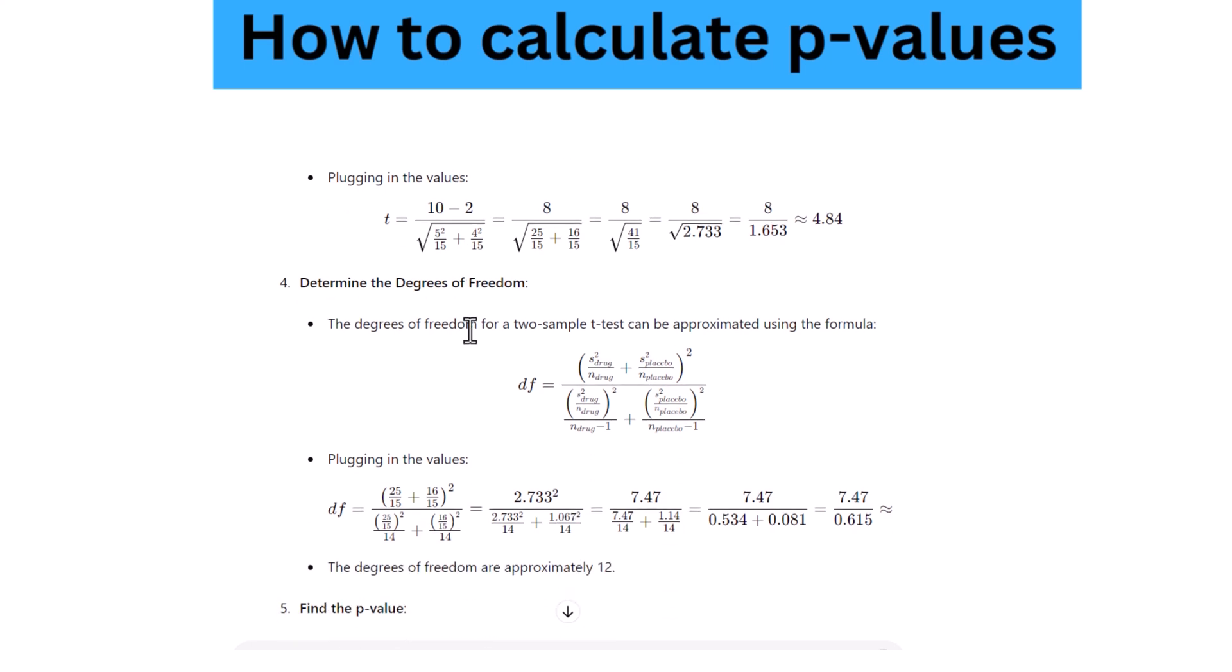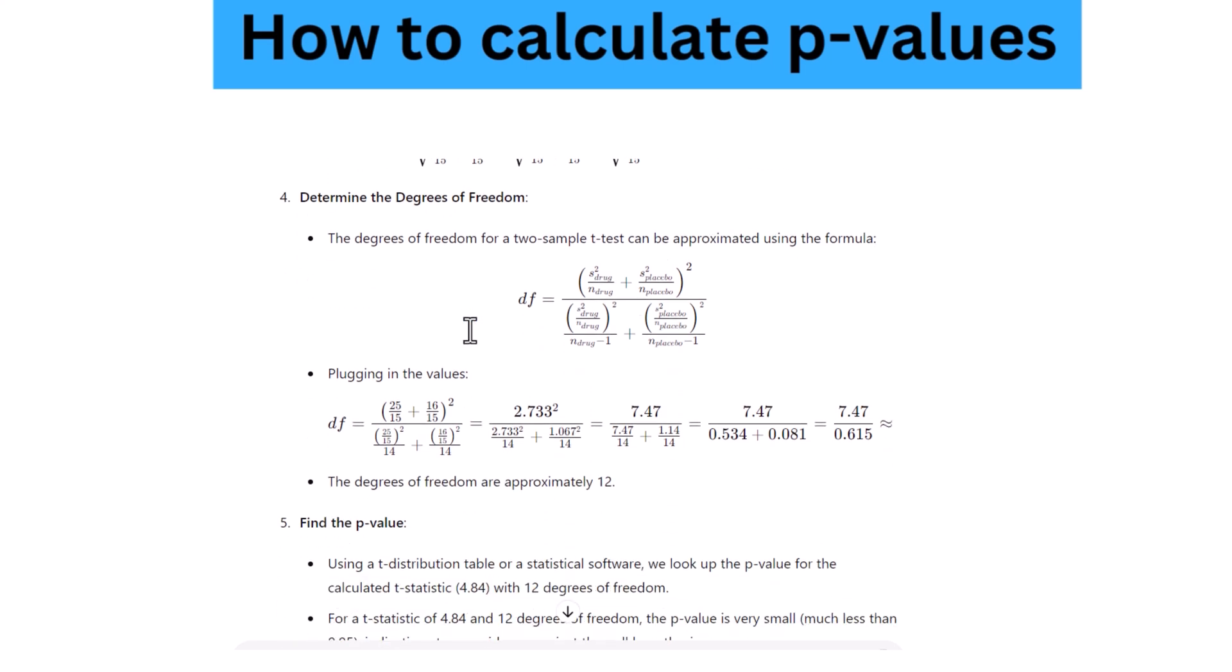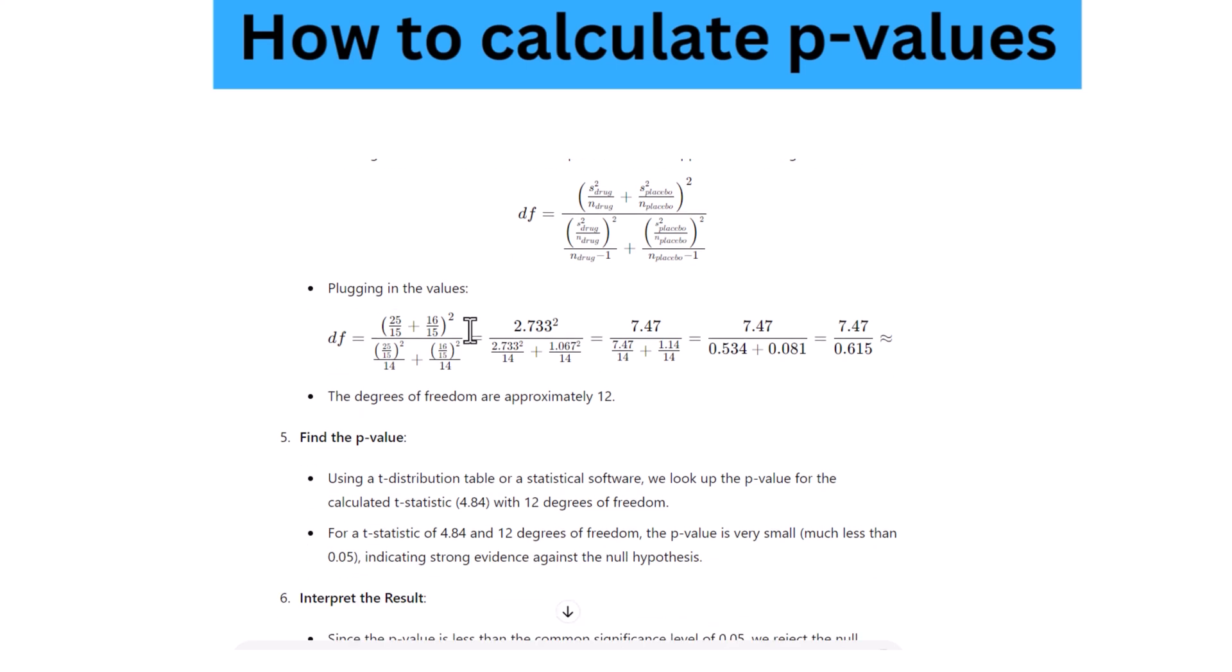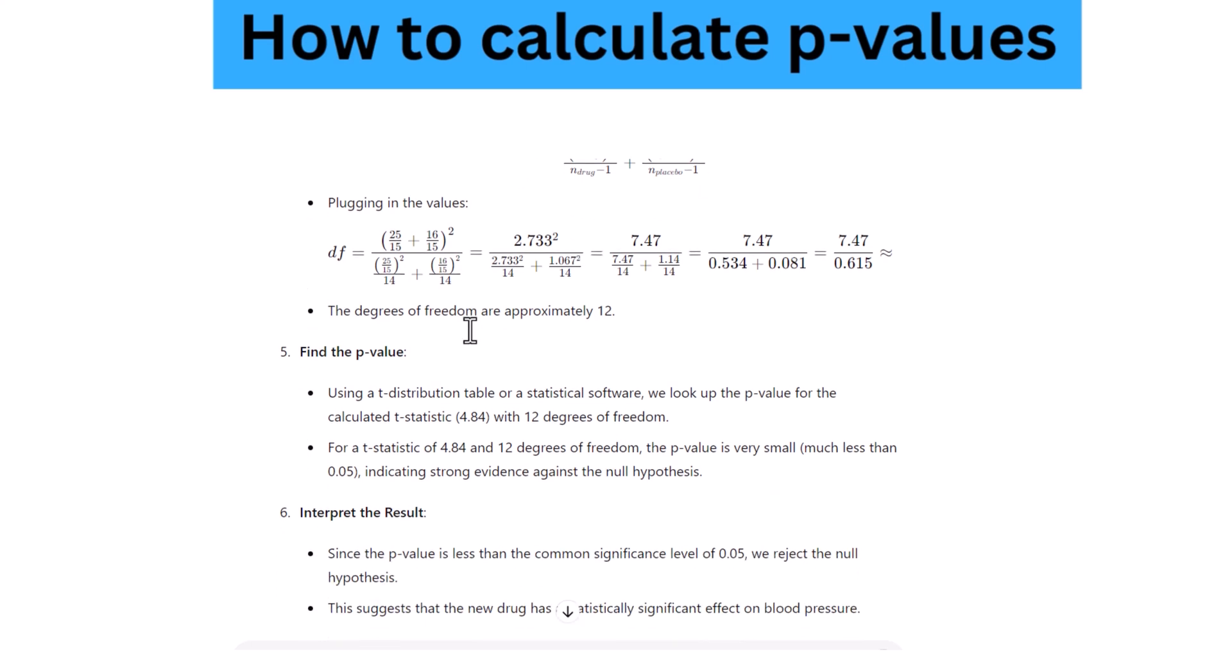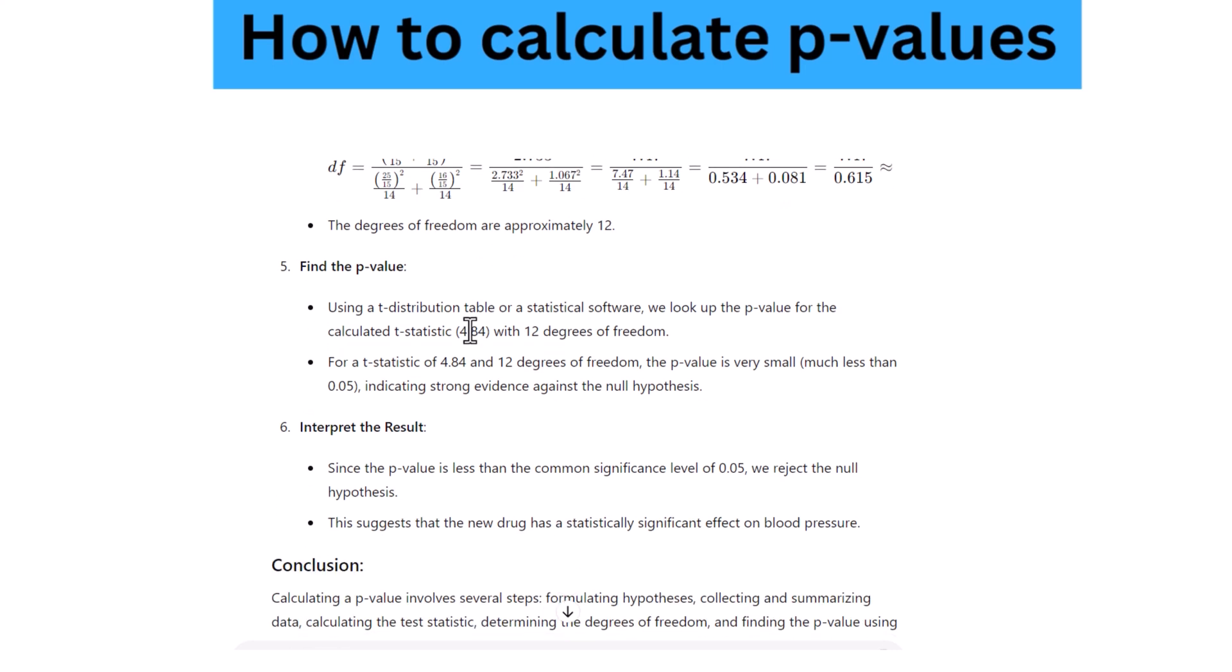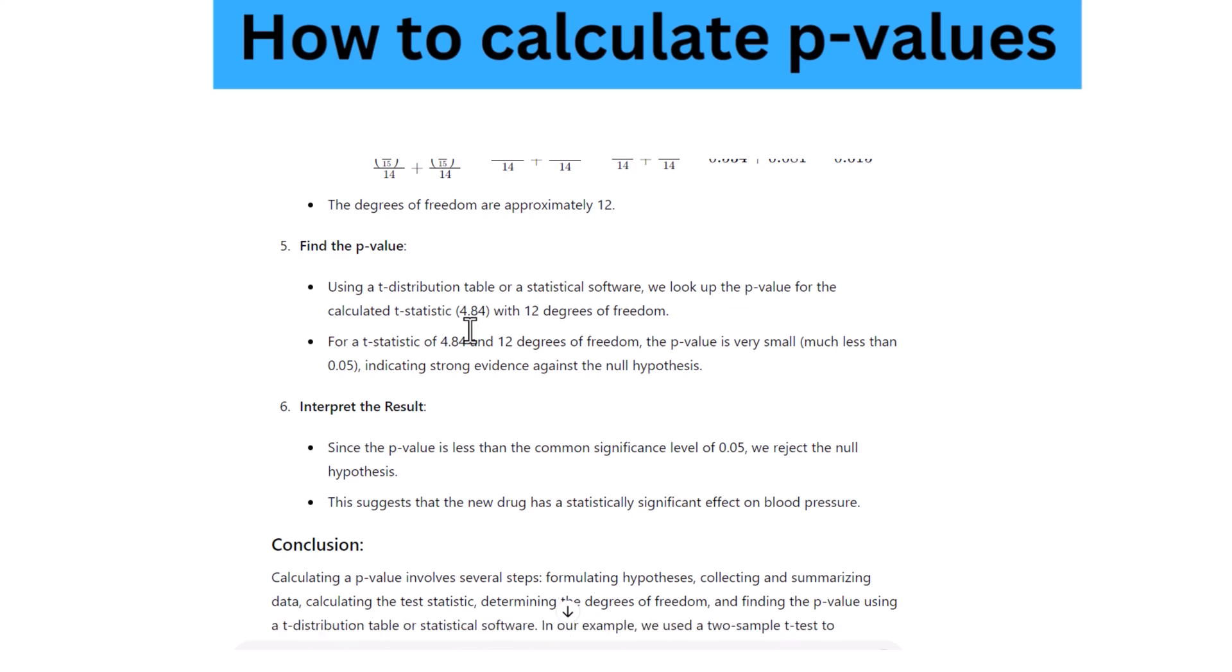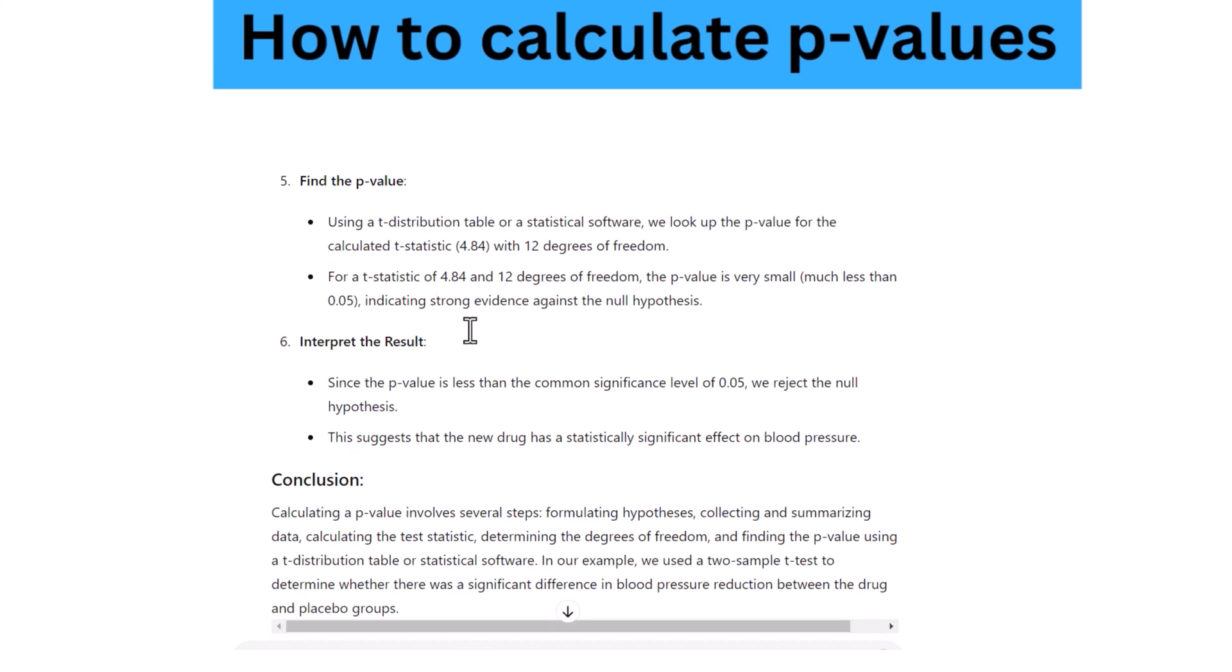The actual p-value is calculated by integrating the probability distribution function to find the relevant areas under the curve using integral calculus. This process can be quite complicated. Fortunately, p-values are usually determined by using tables, which use the test statistic and degrees of freedom, or statistical software such as SPSS, SAS, or R.